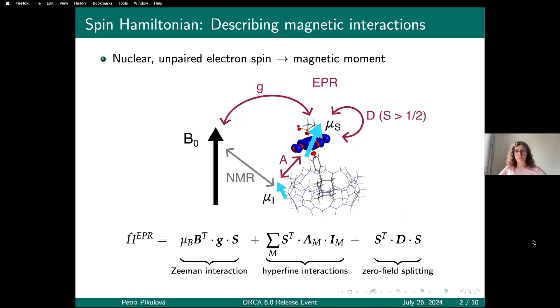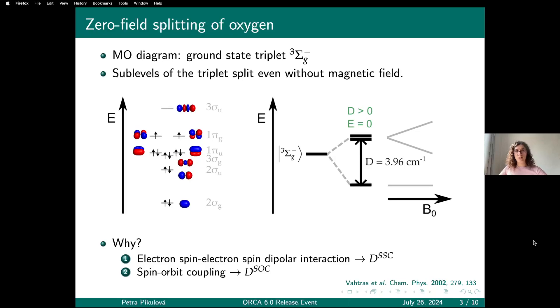In this short talk, I will show you an example of calculating the zero-field splitting in a molecule of oxygen. Here I have prepared a molecular orbital diagram that shows the configuration corresponding to the ground state of the oxygen molecule, which is actually a spin triplet.